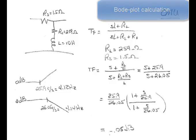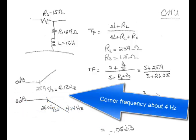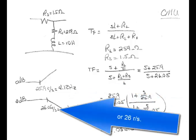It predicts the negative 0.05 dB low frequency gain and the corner frequency at about 4 hertz, or 26 radians per second.